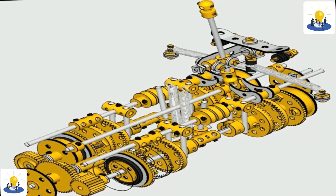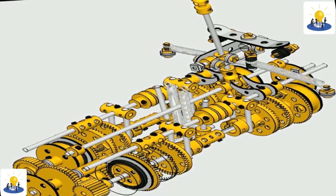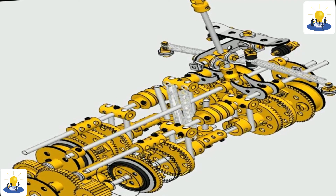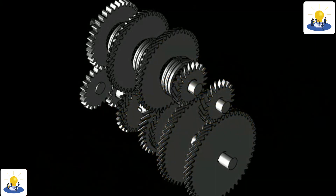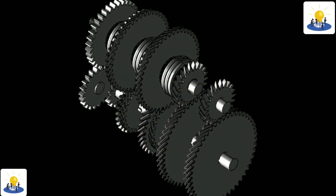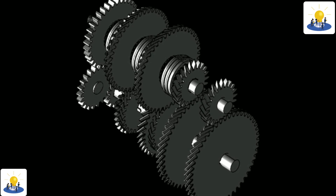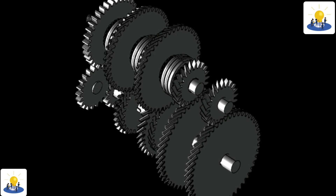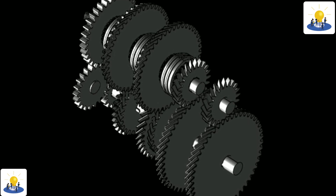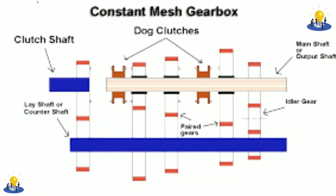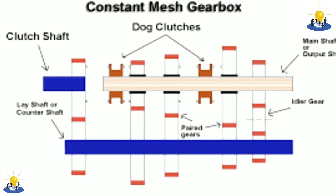Mechanical wear of the synchronizer rings and sleeves can cause the synchromesh system to become ineffective over time. These rings and sleeves have to overcome the momentum of the entire input shaft and clutch disc during each gear shift, and also the momentum and power of the engine if the driver attempts a gear shift without fully disengaging the clutch. Larger differences in speed between the input shaft and the gear require higher friction forces from the synchromesh components, potentially increasing their wear rate.